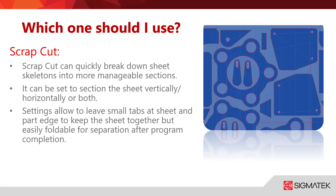Scrap cut, just like crop cut, can quickly break down the sheet skeleton, but instead of focusing on the material you're keeping, this is more of a skeleton-based operation — it's going to break those down into more manageable sections. It can be set to section the sheet either vertically, horizontally, or both, as you can see in the picture on the right. You'll notice with some of those settings it has a little bit of a gap around the part edges, allowing small tabs to be set on sheet and part edges to keep the sheet together but easily foldable for separation after the program is completed.